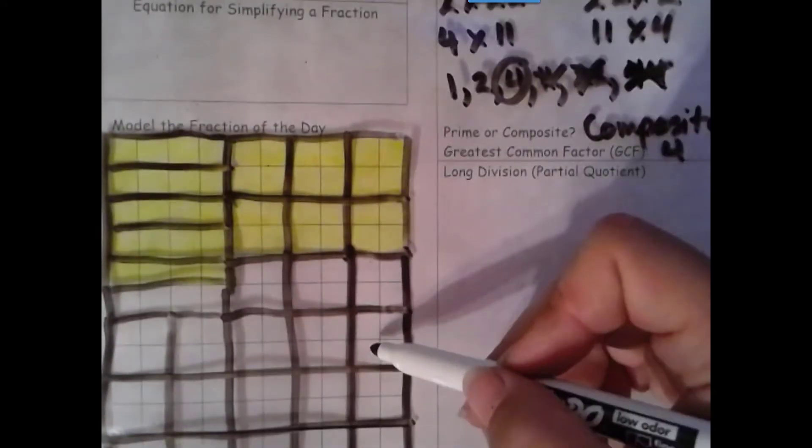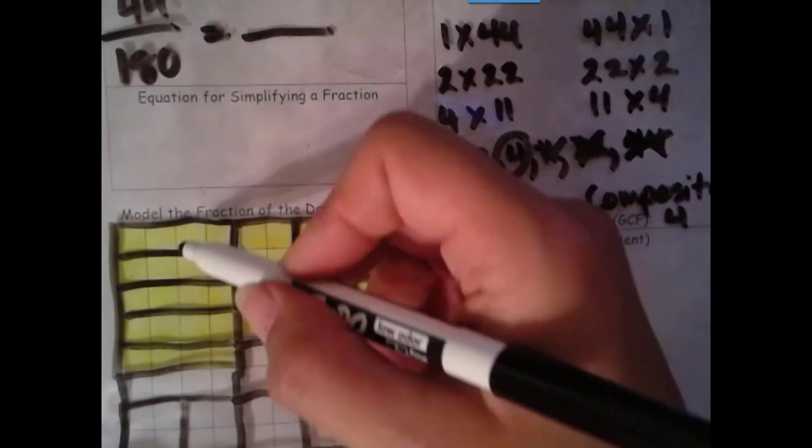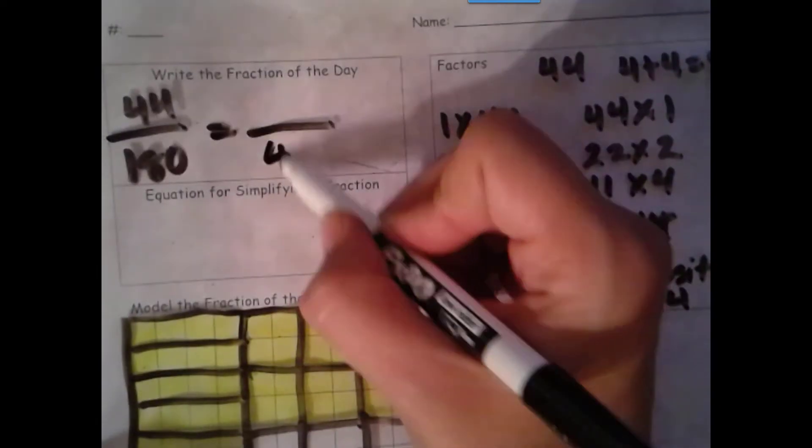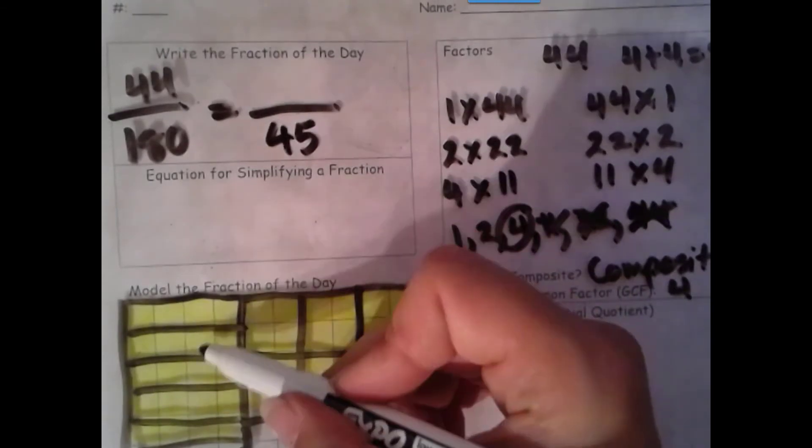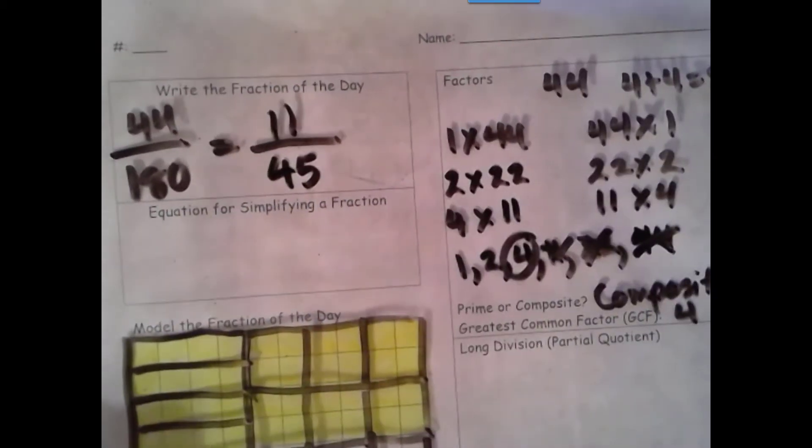I have 5 in each of my rows, so I'm going to count by 5: 5, 10, 15, 20, 25, 30, 31, 32, 33, 34, 35, 36, 37, 38, 39, 40, 41, 42, 43, 44, 45 total groups. And I have 11 shaded in.